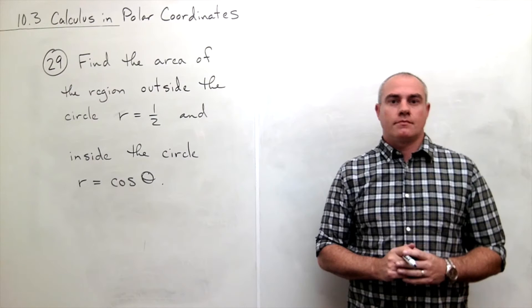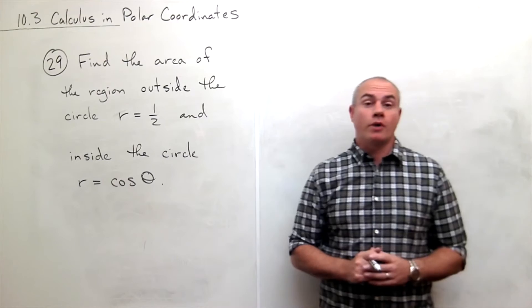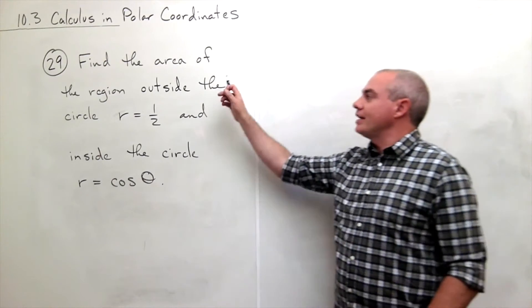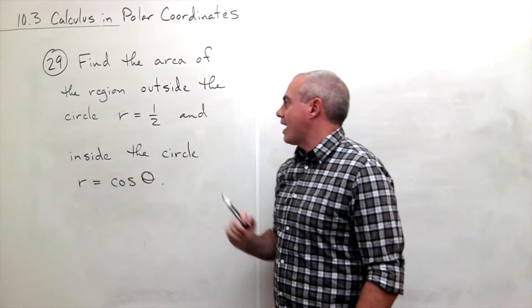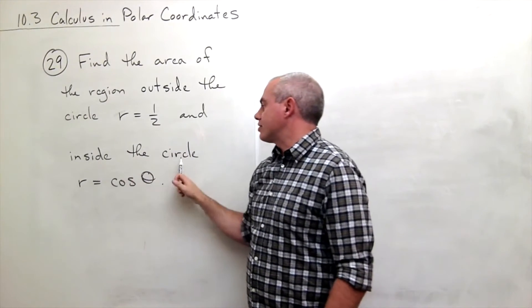I'm the calculus professor and today I'll be talking to you about calculus and polar coordinates. In problem number 29, we'd like to find the area of the region outside the circle r equals one-half and inside the circle